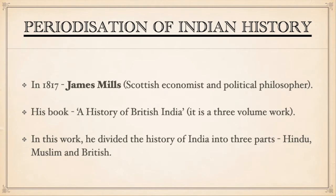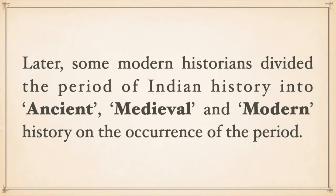But this division was proven wrong by some Indian historians because other religions like Buddhism, Jainism and Sikhism were also present at that time. Later, some Western historians divided the period of Indian history into ancient, medieval and modern history based on the occurrence of the period. They believed that modern thought in India came with the coming of the British, so they called the British era as the modern period. Thus, Indian history is divided into three parts: ancient, medieval and modern.